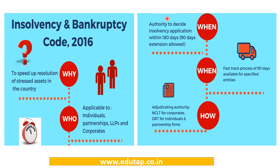The authorities under the code are termed adjudicating authorities, which are required to decide insolvency applications within 180 days, with a 90-day extension allowed in some cases. There is also a provision for a fast-track insolvency resolution process for small companies, to be completed within 90 days. The most important adjudicating authority is different for individuals and partnership firms versus corporates — it can be the National Company Law Tribunal or the Debt Recovery Tribunal.